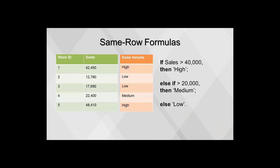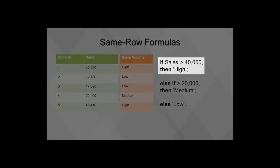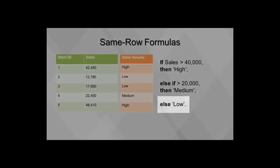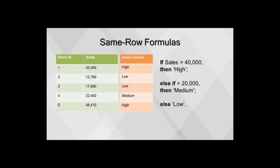One of the most common applications of conditional statements is to bin or tile numeric variables—a process which transforms continuous numeric variables into categorical variables. For example, we can compute sales volume with if-then logic: if sales is greater than 40,000, then 'high'; else if sales is greater than 20,000, then 'medium'; else 'low'. This formula tests the first condition, and if true, assigns 'high'. The second condition is only evaluated if the first is false, and if true, assigns 'medium'. If neither condition is true, then 'low' is assigned.